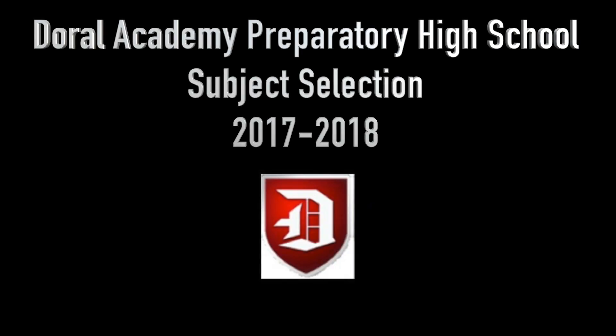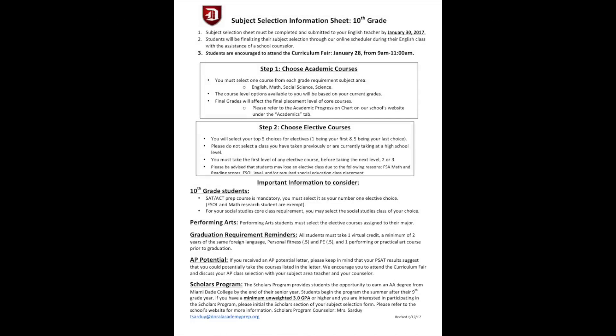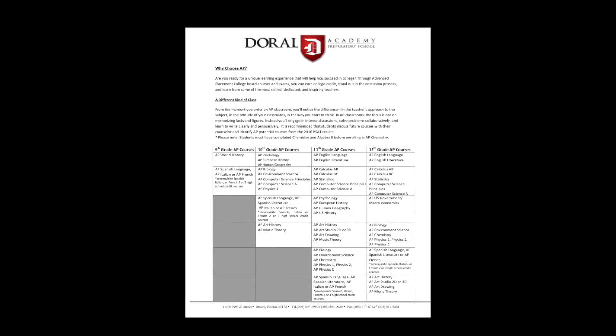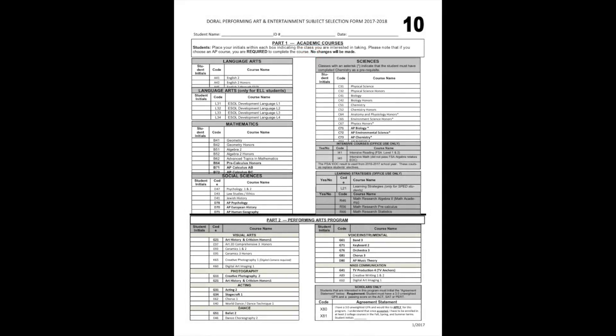Students, this presentation will guide you in the steps for subject selections for your 2017-2018 school year. You have received a packet that includes the following: the subject selection information sheet for your grade level; the YAP handout, which gives you an overview of AP courses and a list of available AP courses; and lastly, the subject selection sheet for you to select your classes for next school year.